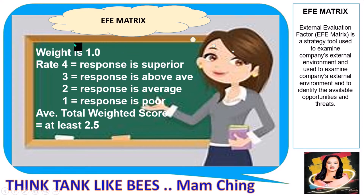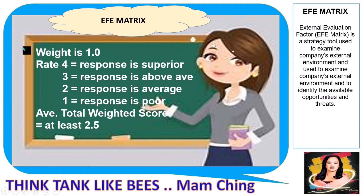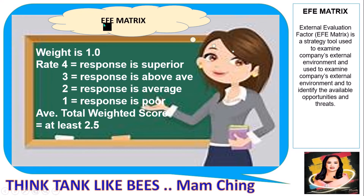To compute the EFE matrix, list all external activities such as opportunities O1 through O10, depending on how many opportunities are identified from the company being analyzed. Weight all of them to sum to one or 100 percent, based on how significant each opportunity appears. Then rate each from 1 to 4, where 4 is superior, 3 is above average, 2 is average, and 1 is poor. Multiply the two columns and sum them; the total weighted score should be at least 2.5 for a favorable EFE matrix.